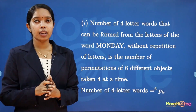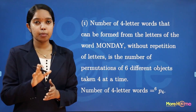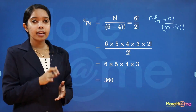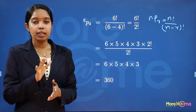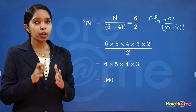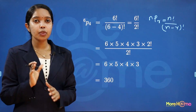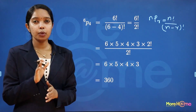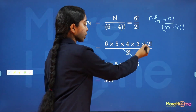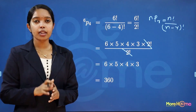The permutation formula is NPR equals N factorial divided by N minus R factorial. So in this case, 6P4 equals 6 factorial divided by 6 minus 4 factorial, which is 6 factorial divided by 2 factorial. That is 6 into 5 into 4 into 3 into 2 factorial divided by 2 factorial. The 2 factorials cancel.